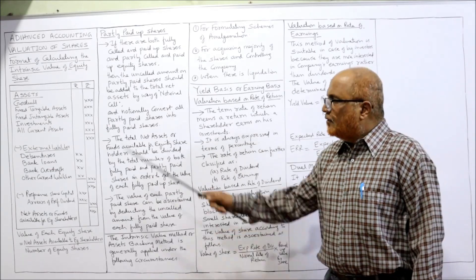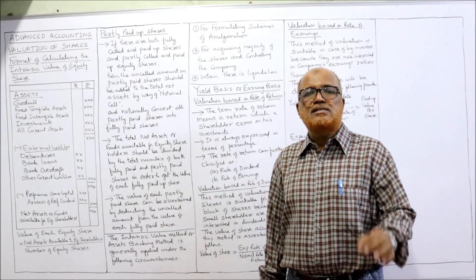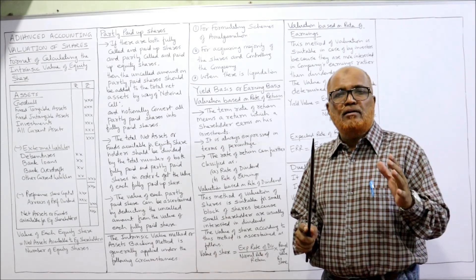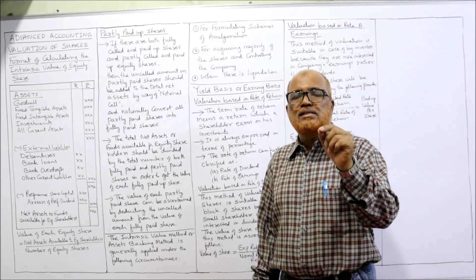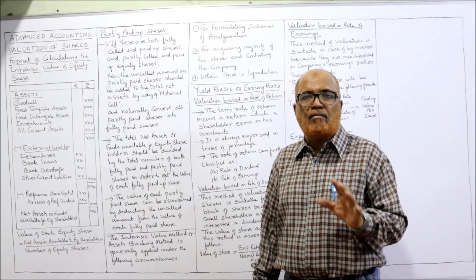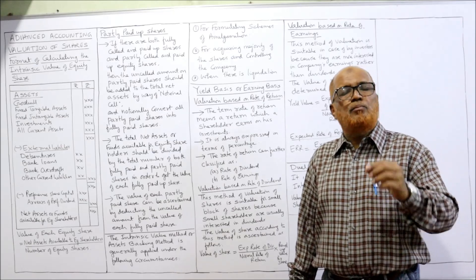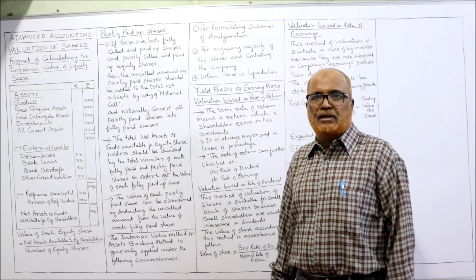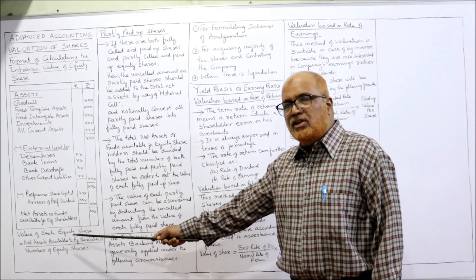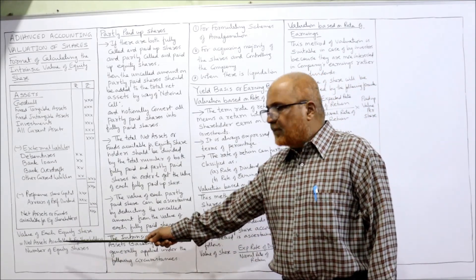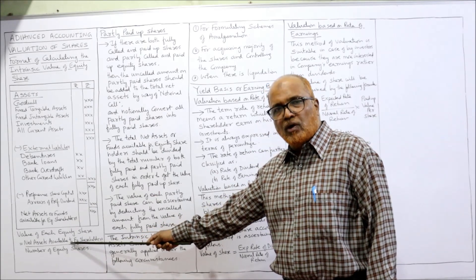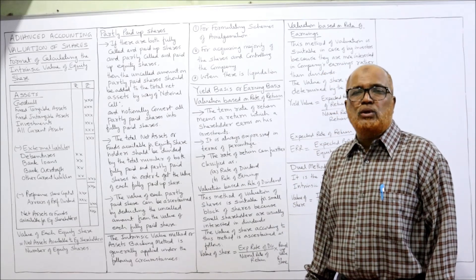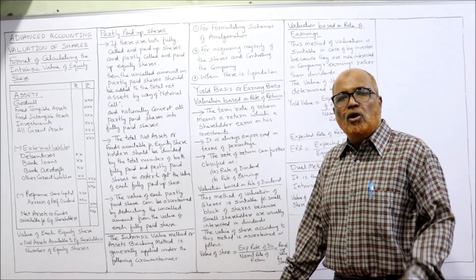Remember, whatever points we are discussing now, the same things we are going to apply in the formula. I suggest my viewers always keep a notebook, pencil, calculator, and pen ready — whenever I say something important, note it down. The value of each share can be ascertained by this formula: net assets available or funds available for equity shareholders divided by number of equity shares. This gives you the value of each equity share.